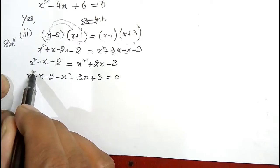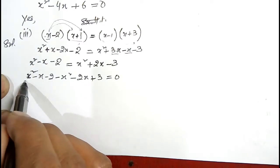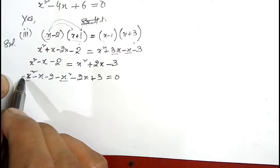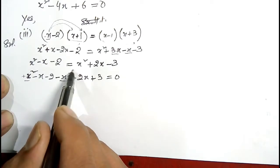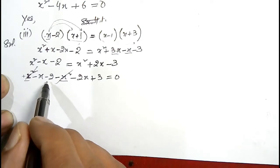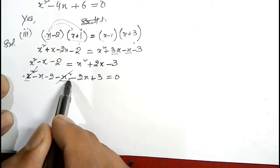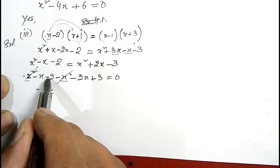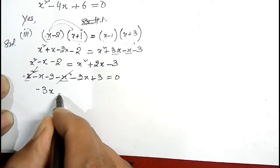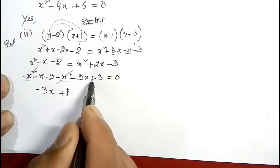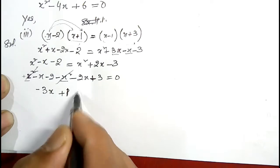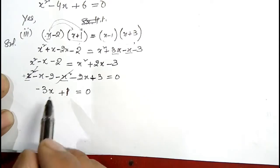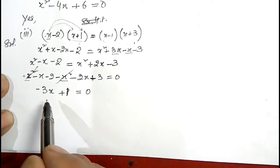Checking the x squared terms: there is plus x squared and minus x squared, so these cancel out. For the x terms: minus x and minus 2x gives minus 3x. For the constants: minus 2 and plus 3 gives plus 1. So the result is minus 3x plus 1 equals zero. Now we can easily check whether this is a quadratic equation or not.